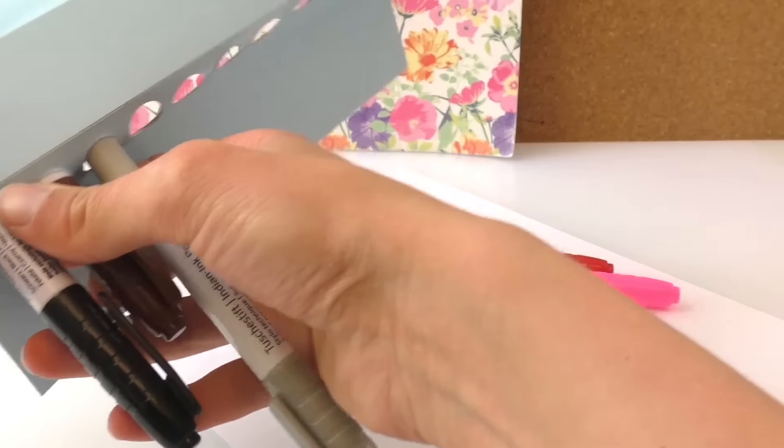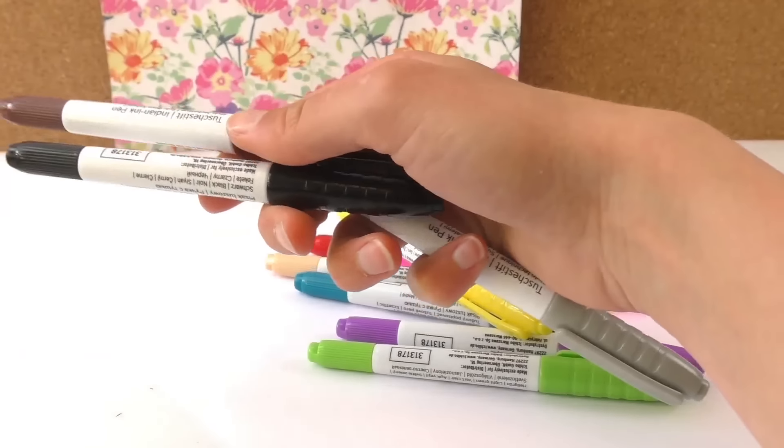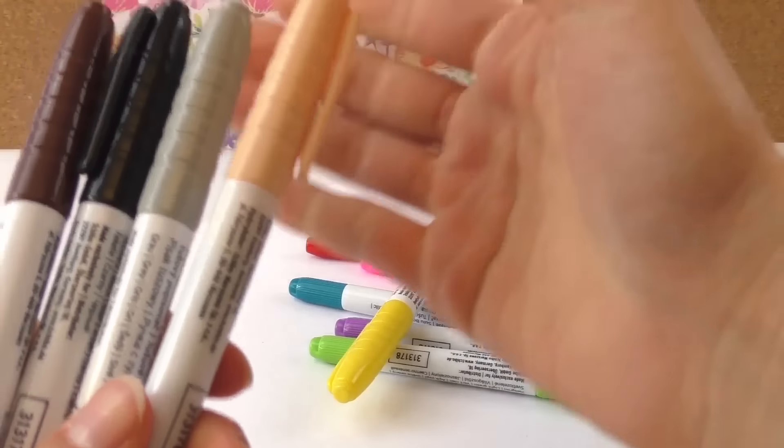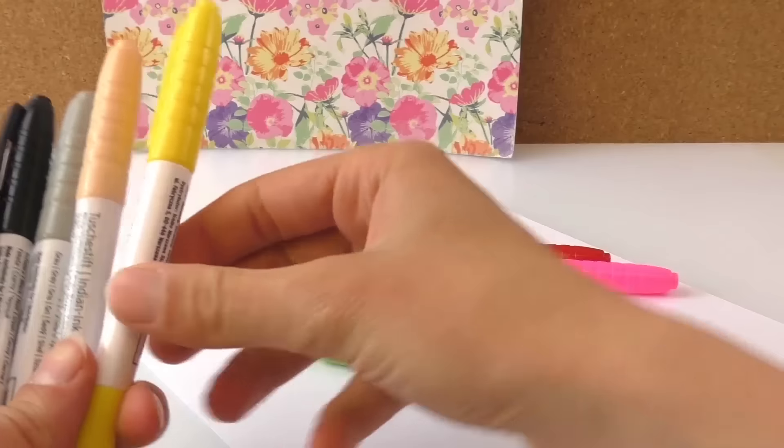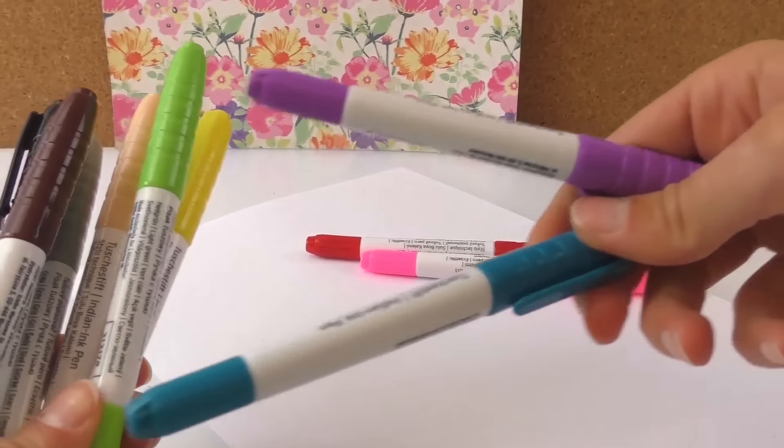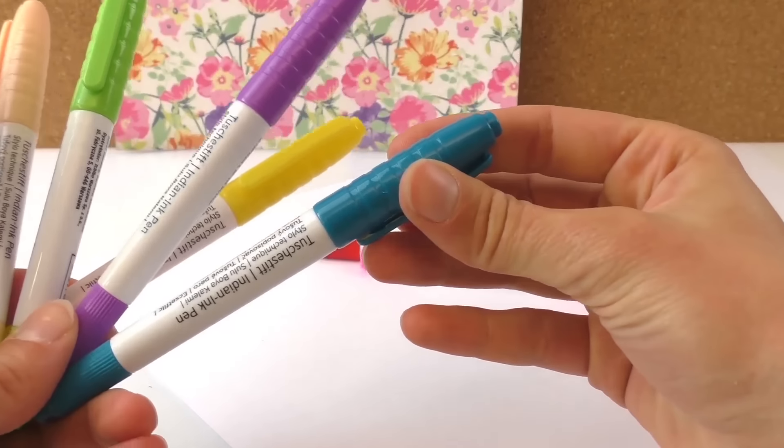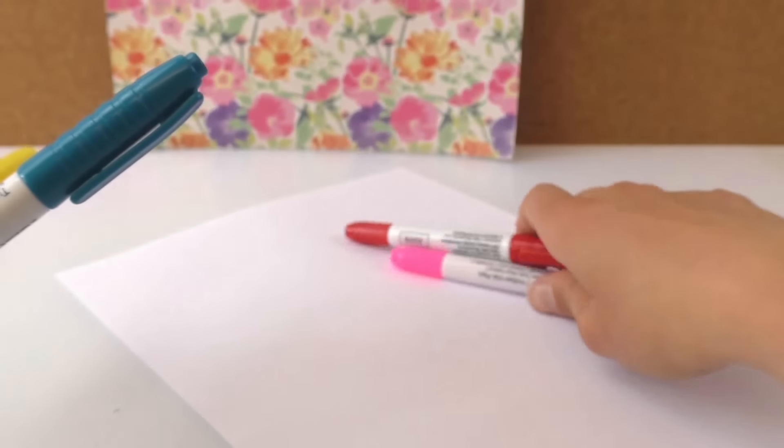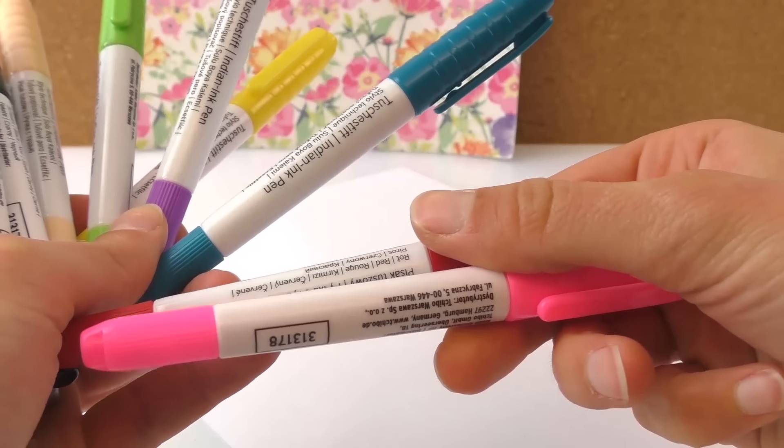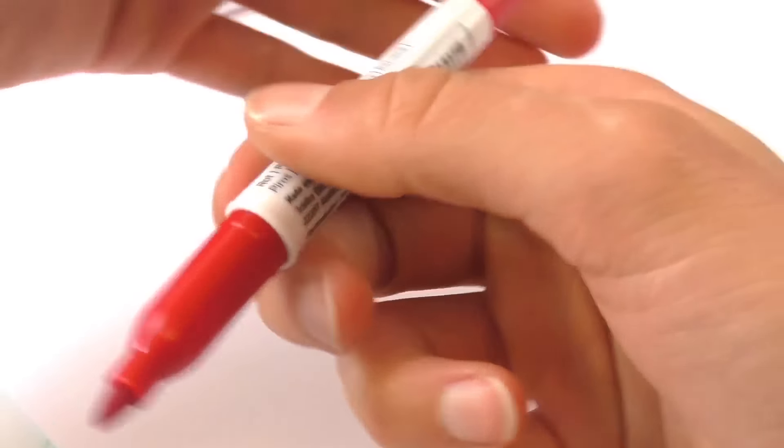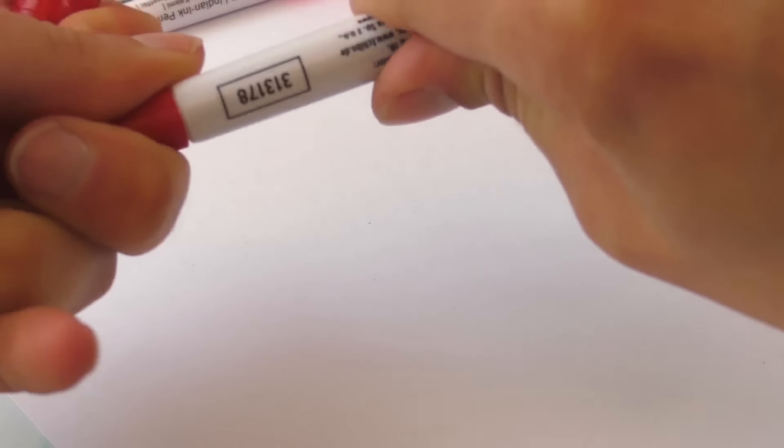These will be very handy for our future. We've got black, brown, gray, a wood color, yellow, green, purple, and blue—it's like a turquoise blue. I really love it. Red, pink, and I've got some paper. Let's start. This is the thicker side.